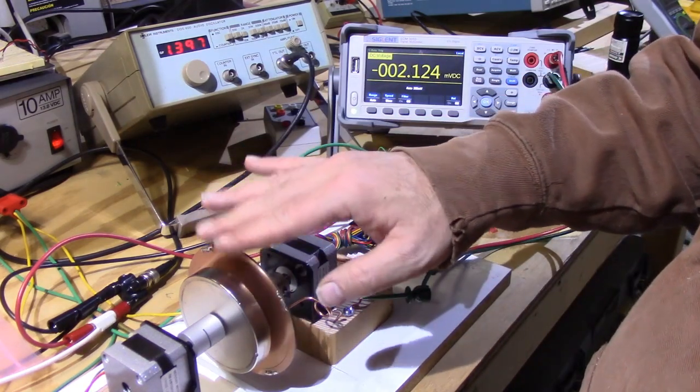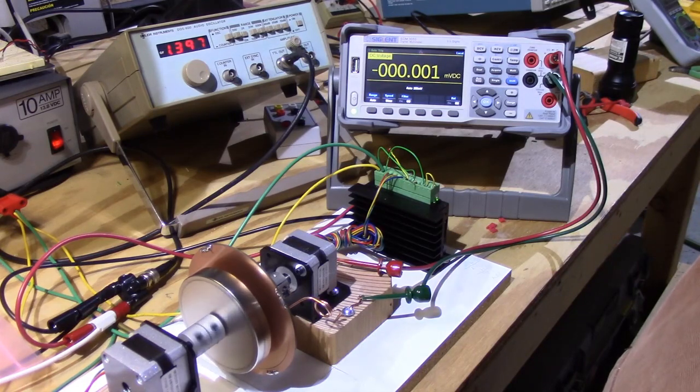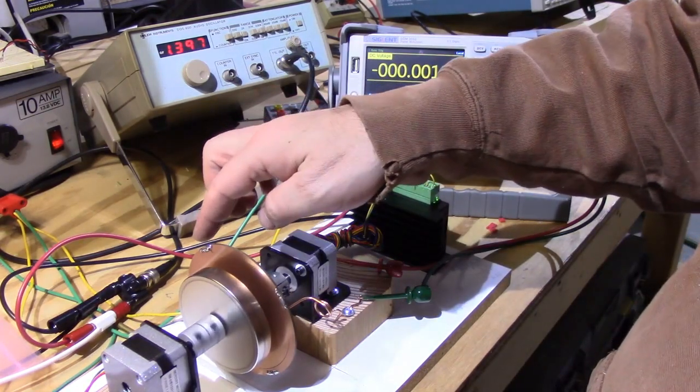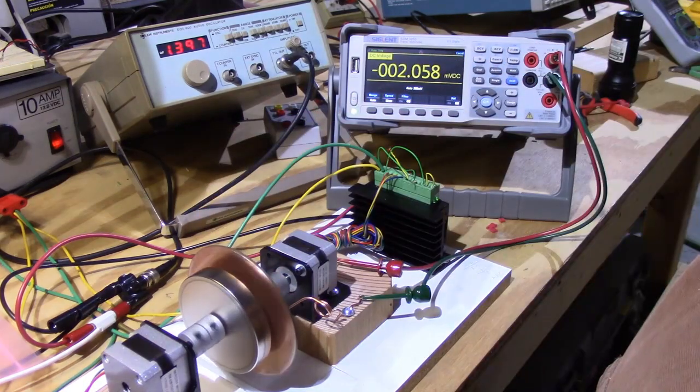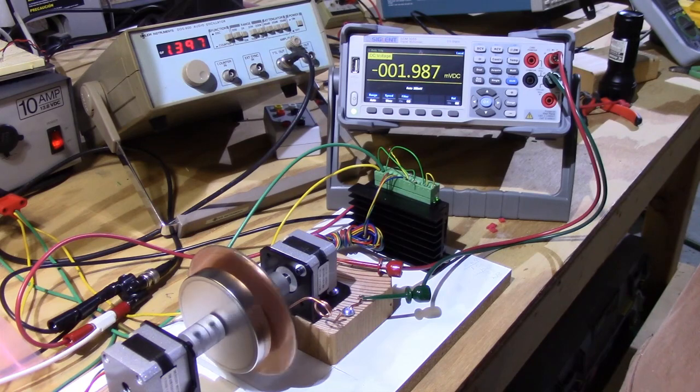Mode two is just the magnet spinning and you can see there's no voltage generated. Mode three is both spinning at the same time, and again we have two millivolts, which shows that the magnet velocity has nothing to do with the voltage that's generated.